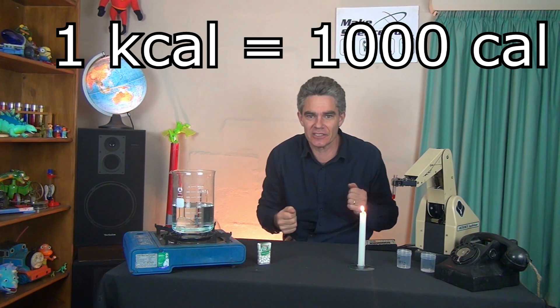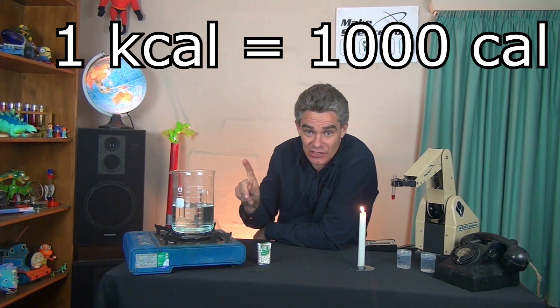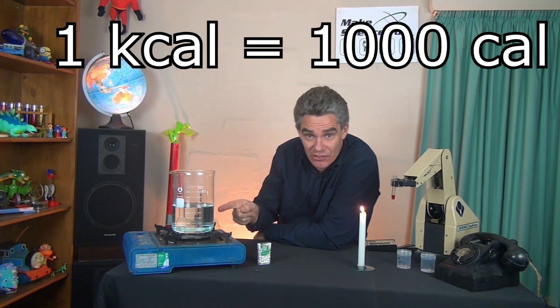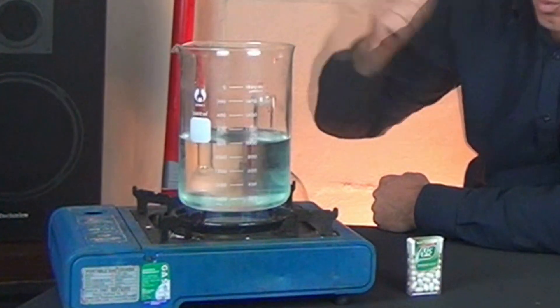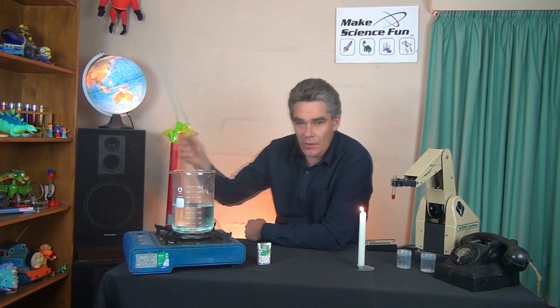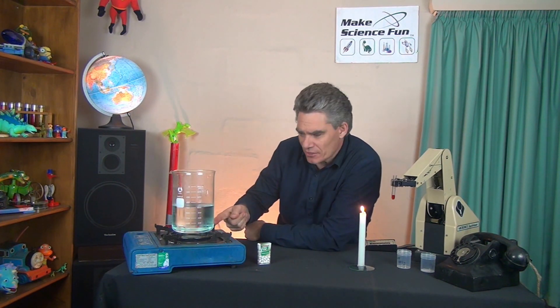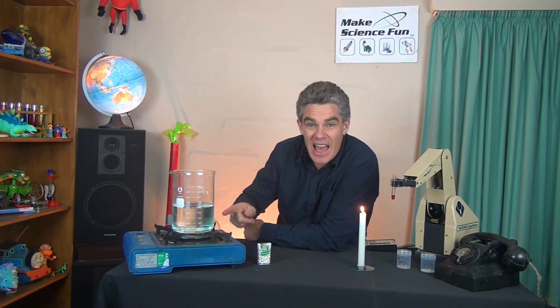In fact, a calorie is such a small amount of energy we often deal in kilocalories, or units of a thousand calories. I'm going to show you what one thousand calories looks like. There's a liter of water here and I'm going to heat it by one degree Celsius — so this is a thousand calories. I just heated this water by one degree Celsius using a thousand calories.